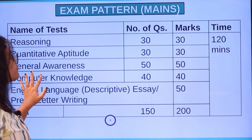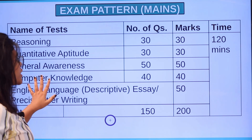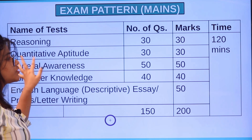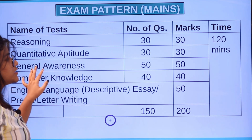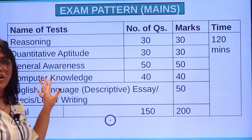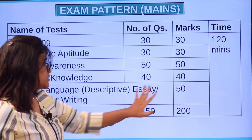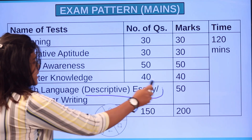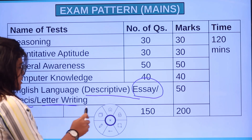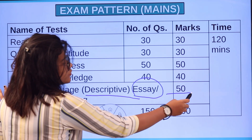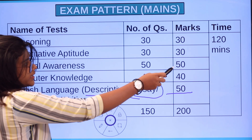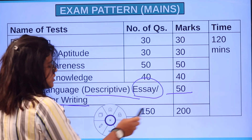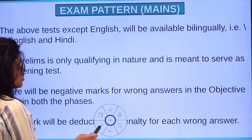The Mains examination has five sections: Reasoning with 30 questions and 30 marks, Quantitative Aptitude with 30 questions and 30 marks, General Awareness with 50 questions and 50 marks, Computer Knowledge with 40 questions and 40 marks, and English Language as a descriptive section — essay, précis, and letter writing — worth 50 marks. The total is 150 questions for 200 marks with a time limit of 120 minutes.